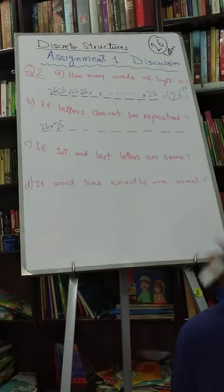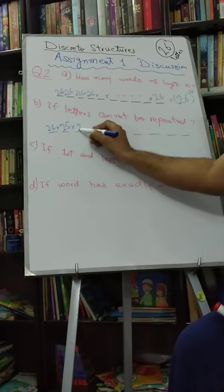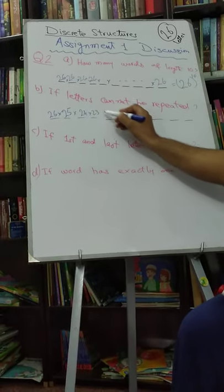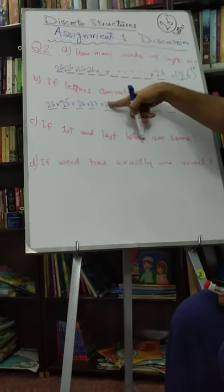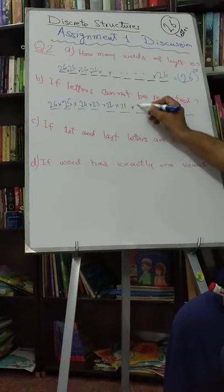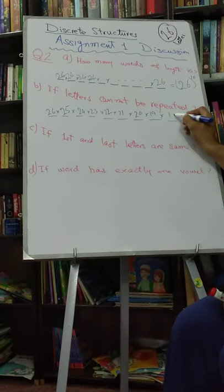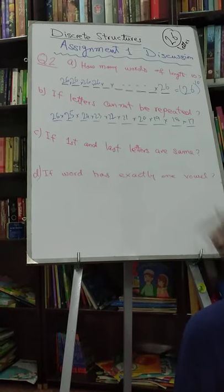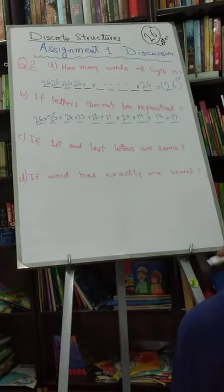For the third, the first two are fixed, so we have 24 choices. For the fourth we have 23 choices, then 22, 21, 20, 19, 18, and the last: 17. So the answer is 26 multiplied by 25 down to 17.